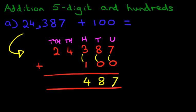And as for the thousands, we're adding nothing to the original number of 4. And the ten thousands is the same, we're adding nothing to 2. So these two numbers remain the same. The thousands remains 4, and the ten thousands remains 2. And we have our answer. It is 24,487.